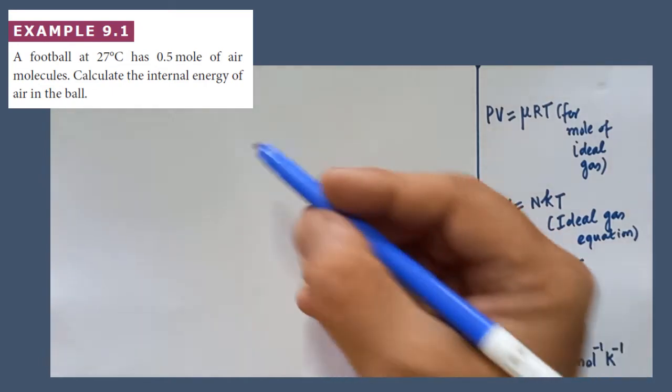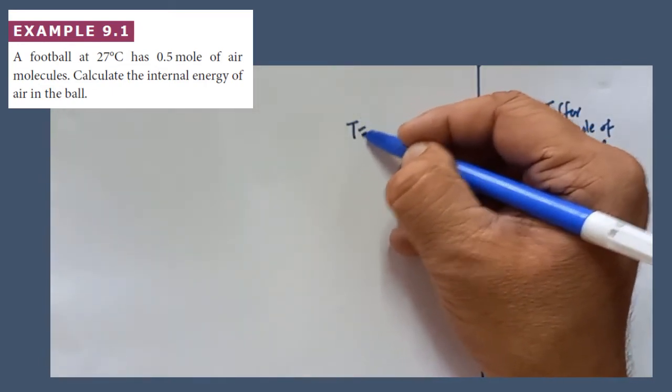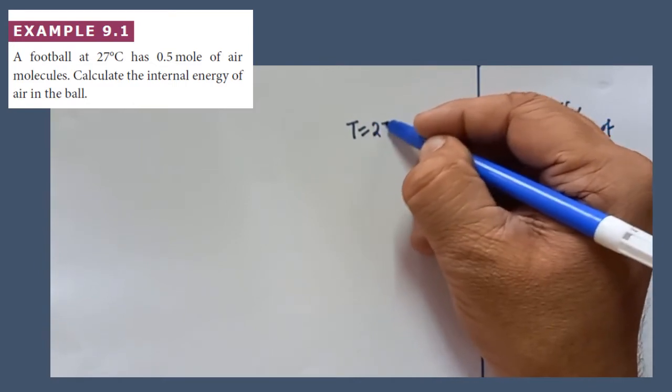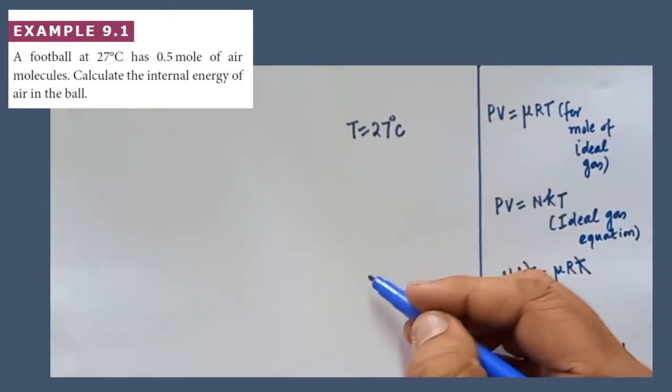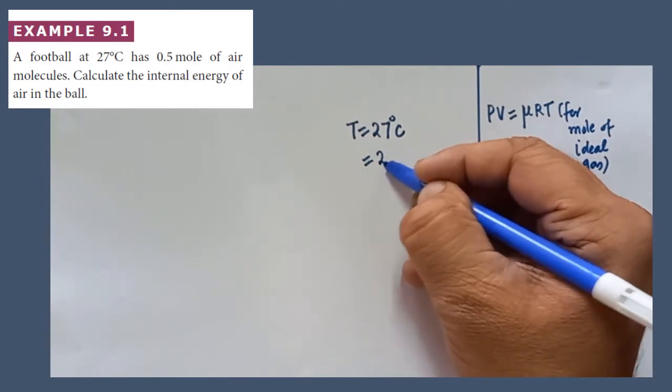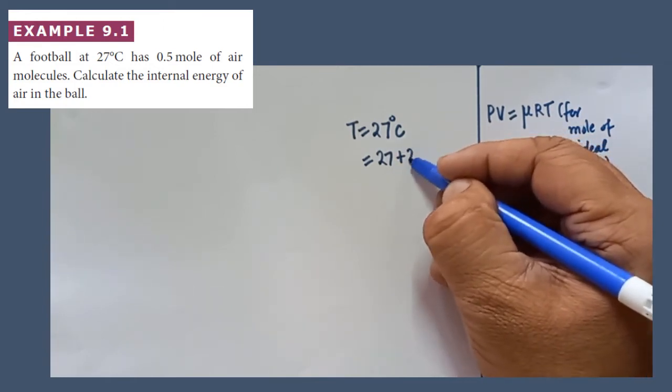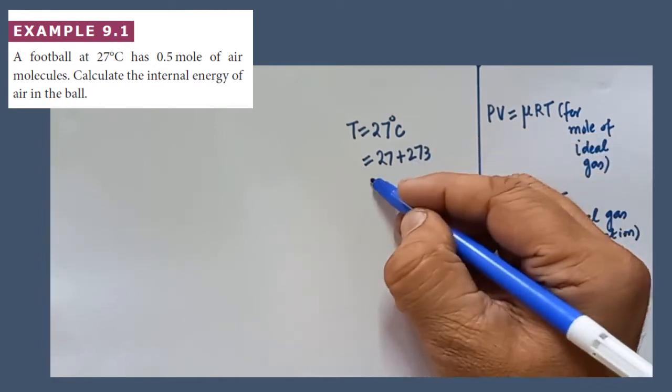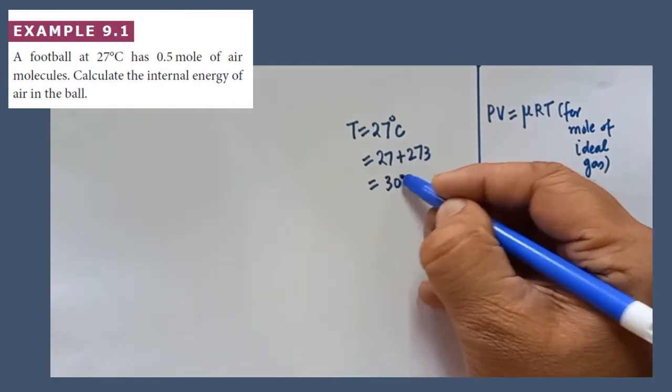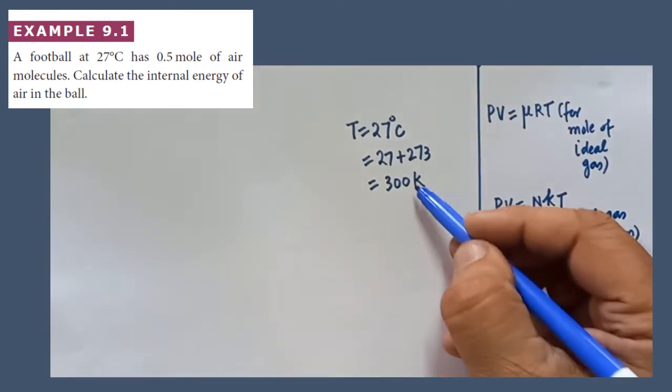A football at 27 degree Celsius, the temperature is given in terms of degree Celsius. That one must be converted into Kelvin because SI unit is Kelvin. Therefore 27 plus 273, this 273 to be added only then that one could be converted into Kelvin. So that one becomes 300 Kelvin. So the temperature of the gas or air which is filled up inside the football is 300 Kelvin.